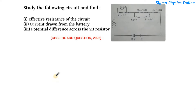Hello students, welcome back. Let's solve an electric circuit diagram based question from the board exam year 2022. The question reads: study the following circuit and find out the effective resistance of the circuit, the current drawn from the battery, and the potential difference across the 5 ohm resistor.